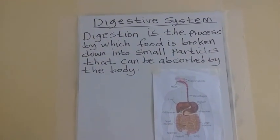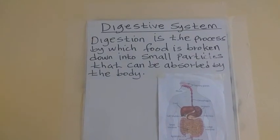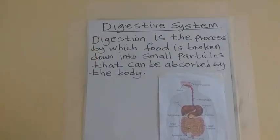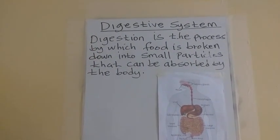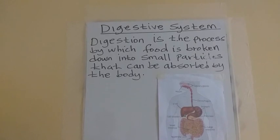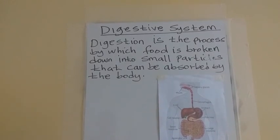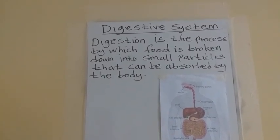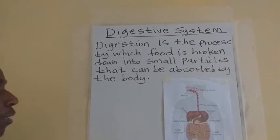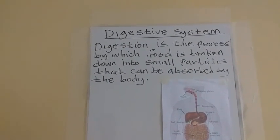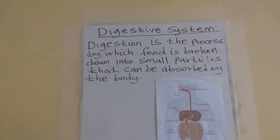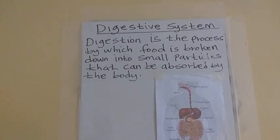In the digestive system, we are going to talk about how food moves from the mouth to the anus. We are going to start with the word digestion. Digestion is the process by which food is broken down into small particles that can be absorbed by the body.